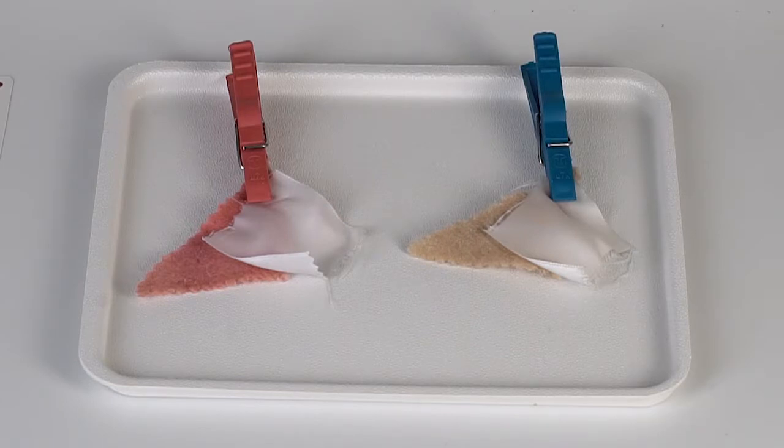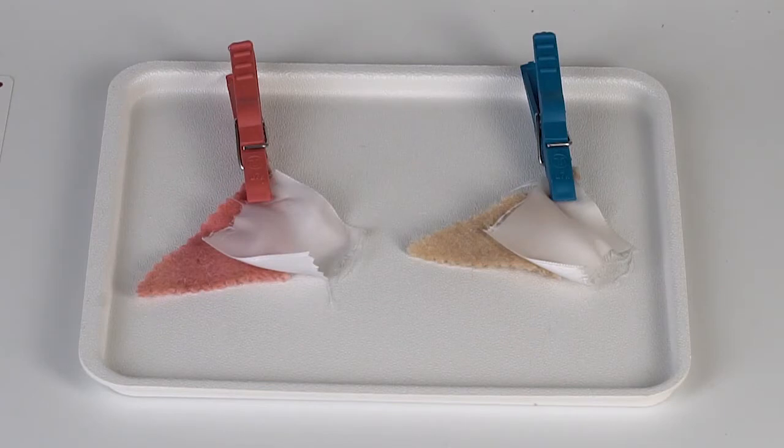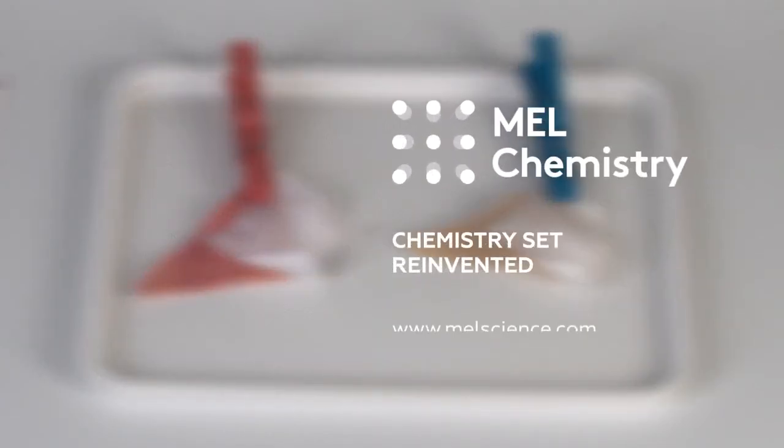This is why eosin colors the wool, but carmine is washed off of both fabrics. Learn more about this experiment on our MEL Chemistry website.